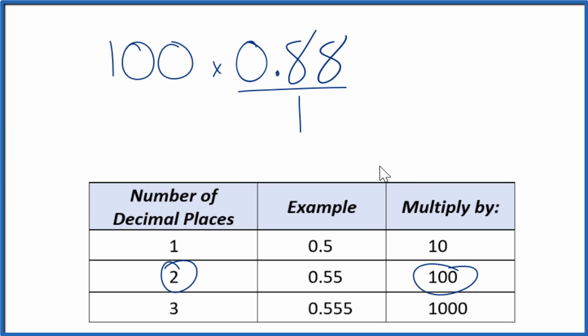100 times 0.88 equals 88. I have my whole number, but I can't just multiply the numerator by 100. I also need to multiply the denominator by 100. That's because 100 divided by 100 equals 1. So I'm just multiplying this by 1. I'm not changing the actual value, just the way it's represented.